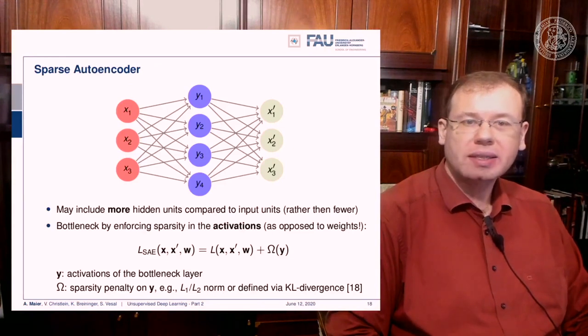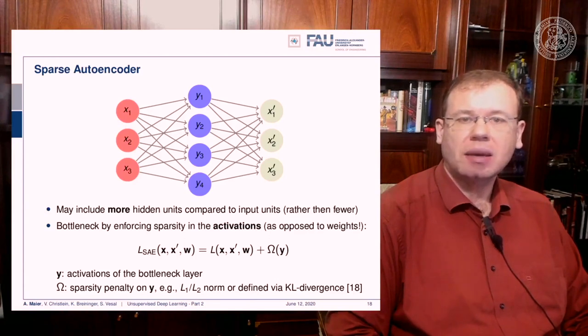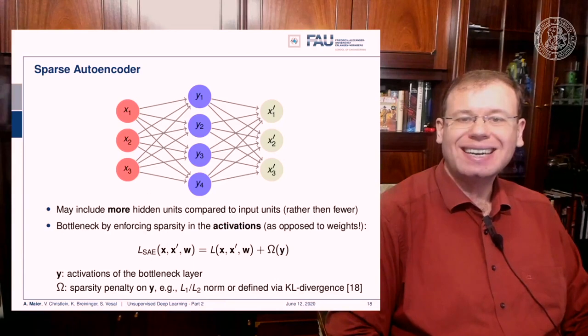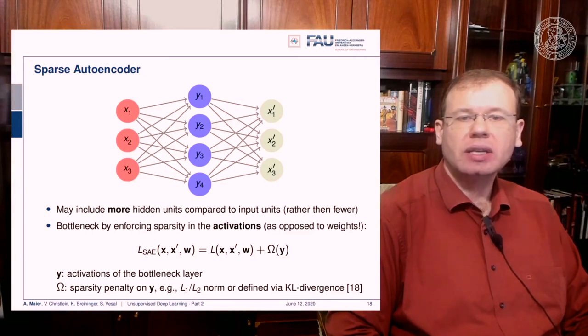There's also things like the sparse autoencoder, and here we have a different idea. We even increase the number of neurons. So you may say, why would you increase the number of neurons? Then you could even find a much simpler solution like the identity and neglect a couple of those neurons. So this idea will not work straightforwardly, and you have to enforce sparsity, which is also coining the name sparse autoencoder. Here, you have to enforce sparsity in the activations using some additional regularization. For example, you can do this with an L1 norm on the activations in Y.